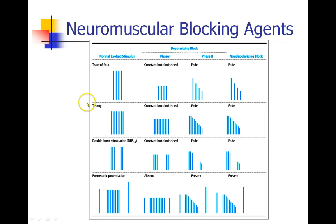Here's the diagram showing how we use the peripheral nerve monitor in these instances. In a normal person, you have four strong twitches. With succinylcholine, they will have four equal twitches but diminished in intensity; if you give them enough, they'll have no twitches. As the succinylcholine wears off, all four twitches come back with the same intensity.